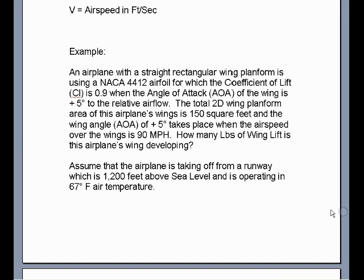So to finish off this lecture, we'll use an example. An airplane with a straight rectangular wing plan form is using a NACA 4412 airfoil for which the coefficient of lift is 0.9 when at an angle of attack of positive five degrees to the relative airflow. The total 2D wing plan form area of this airplane's wing is 150 square feet and the wing angle of positive five degrees takes place when the airspeed over the wings is 90 miles per hour. How many pounds of wing lift is this airplane's wing developing? So assume that the airplane is taking off from a runway which is 1200 feet above sea level elevation and is operating in 67 degree Fahrenheit air temperature.